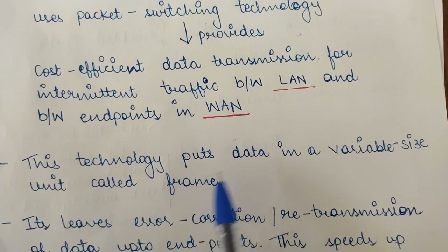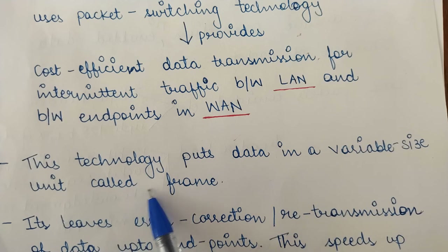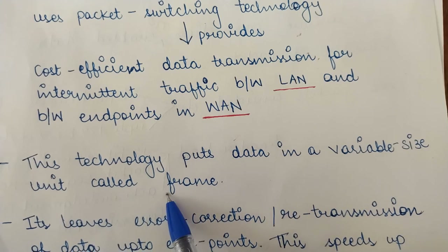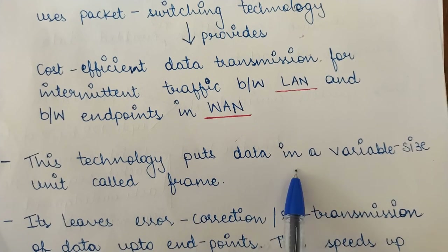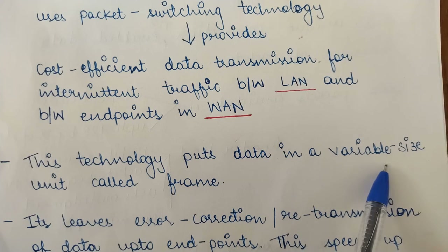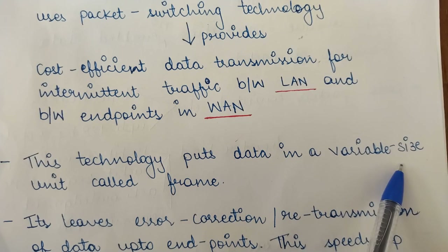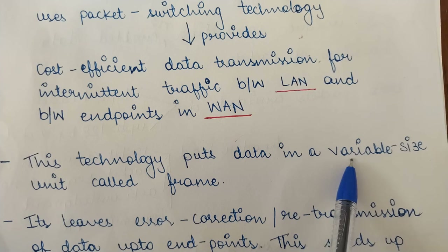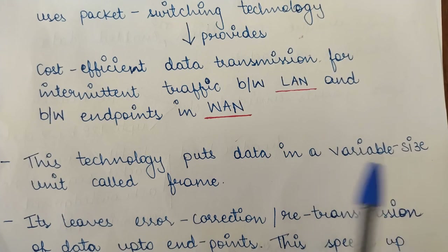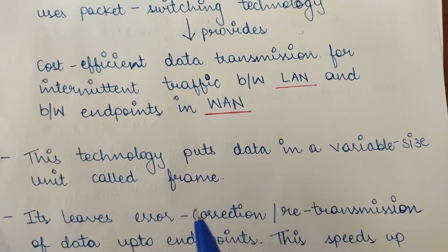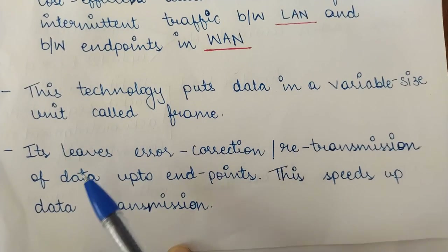This packet switching technology puts data in a variable-size unit called a frame. The data units in Frame Relay are known as frames, and the data can be of variable size — there is no fixed size for the data units. They can vary in size every time.